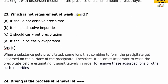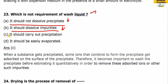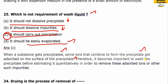Requirements of a wash liquid: it should not dissolve the precipitate; it should dissolve and remove impurities; it should prevent peptization; and it should be easily evaporated. When the precipitate forms, ions get adsorbed on its surface, so washing is important. The answer is C.